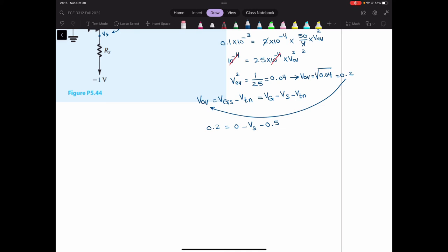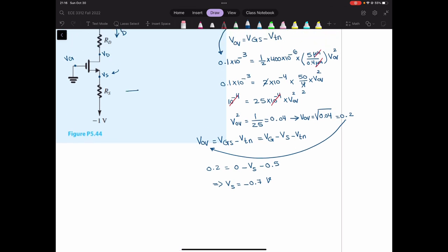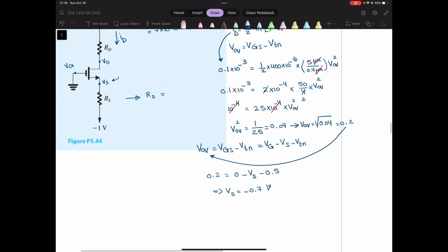Therefore, from here, VS is equal to negative 0.7 volts. So I found VS equal to 0.7 volts. Therefore, from here, RS, because RS is VS minus minus 1 over ID. Why? Because ID is going to come here as well since the current in the gate is 0. So IS and ID is equal here. So ID in the sources is the same as I in the drain.